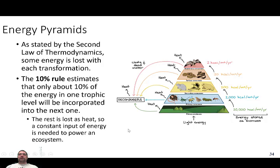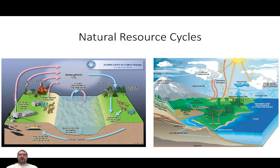Heat is lost at each one of the steps, along with other waste material. Some of this energy is not available for consumption and might be bound up in this energy model for a while. But in that conversion, when organisms are consumed, heat is being lost and energy is lost with it. Next time, we're going to talk about natural resource cycles — things like the water cycle, carbon cycle, nitrogen cycle, and phosphorus cycle.